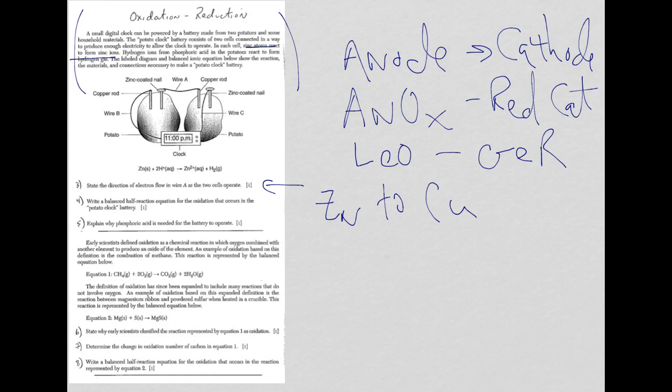Okay. For question four, it says, write a balanced half-reaction equation for the oxidation occurs. Well, this is the second time now, in 2015, where you were asked to write a oxidation half-reaction. We already know that we have zinc atoms. So, that's zinc with an oxidation number of zero. Going to zinc ions. Now,